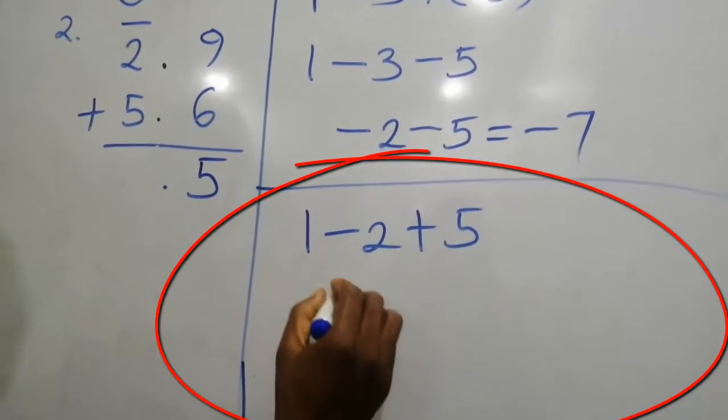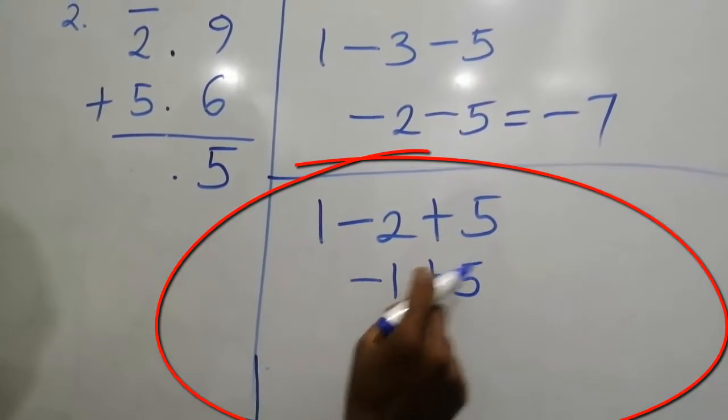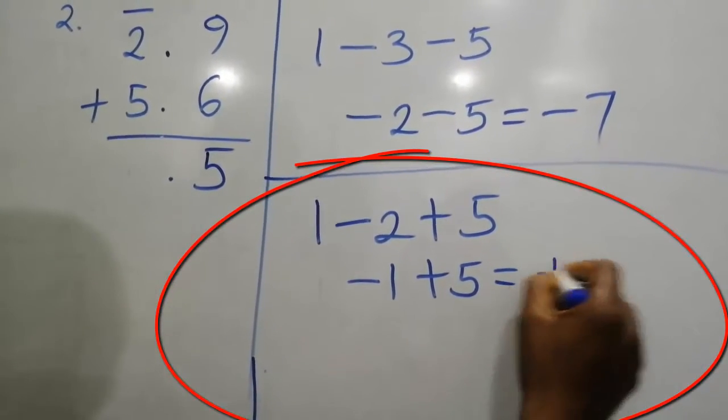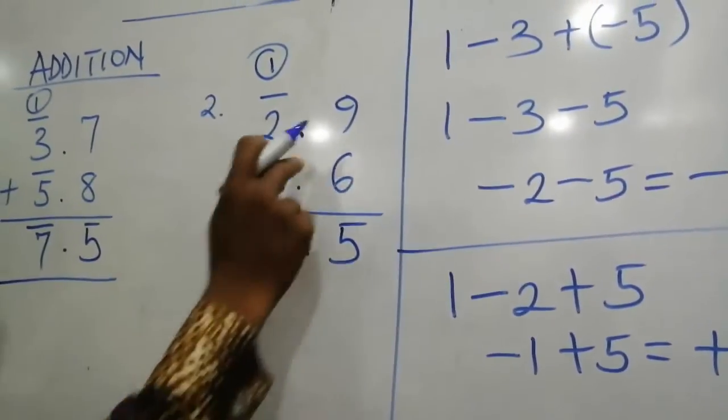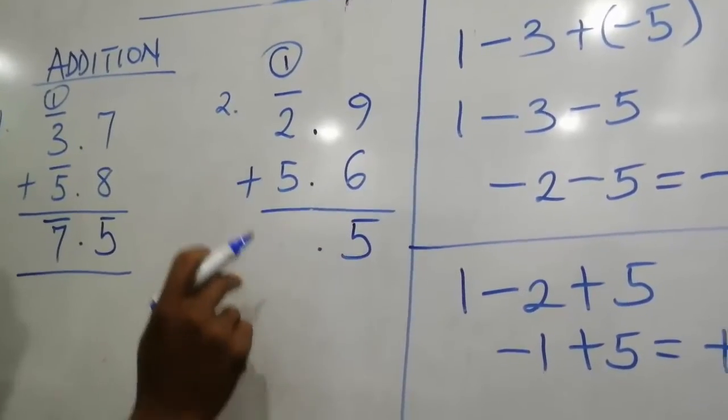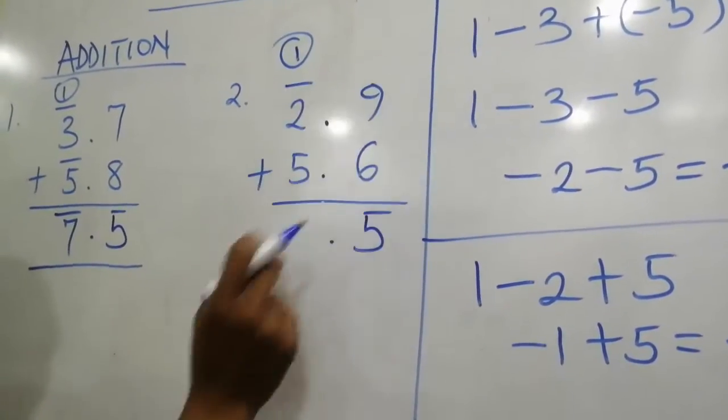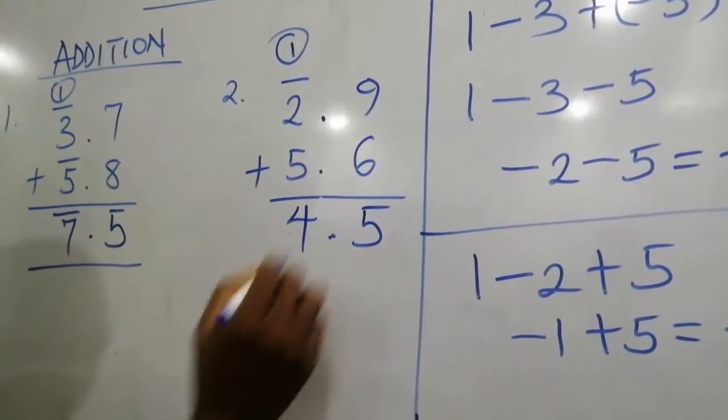1 minus 2, that's minus 1 plus 5. Minus 1 plus 5, that will give us plus 4. Then minus 2.9 plus 5.6, that is, bar 2.9 plus 5.6 will give us 4.5.